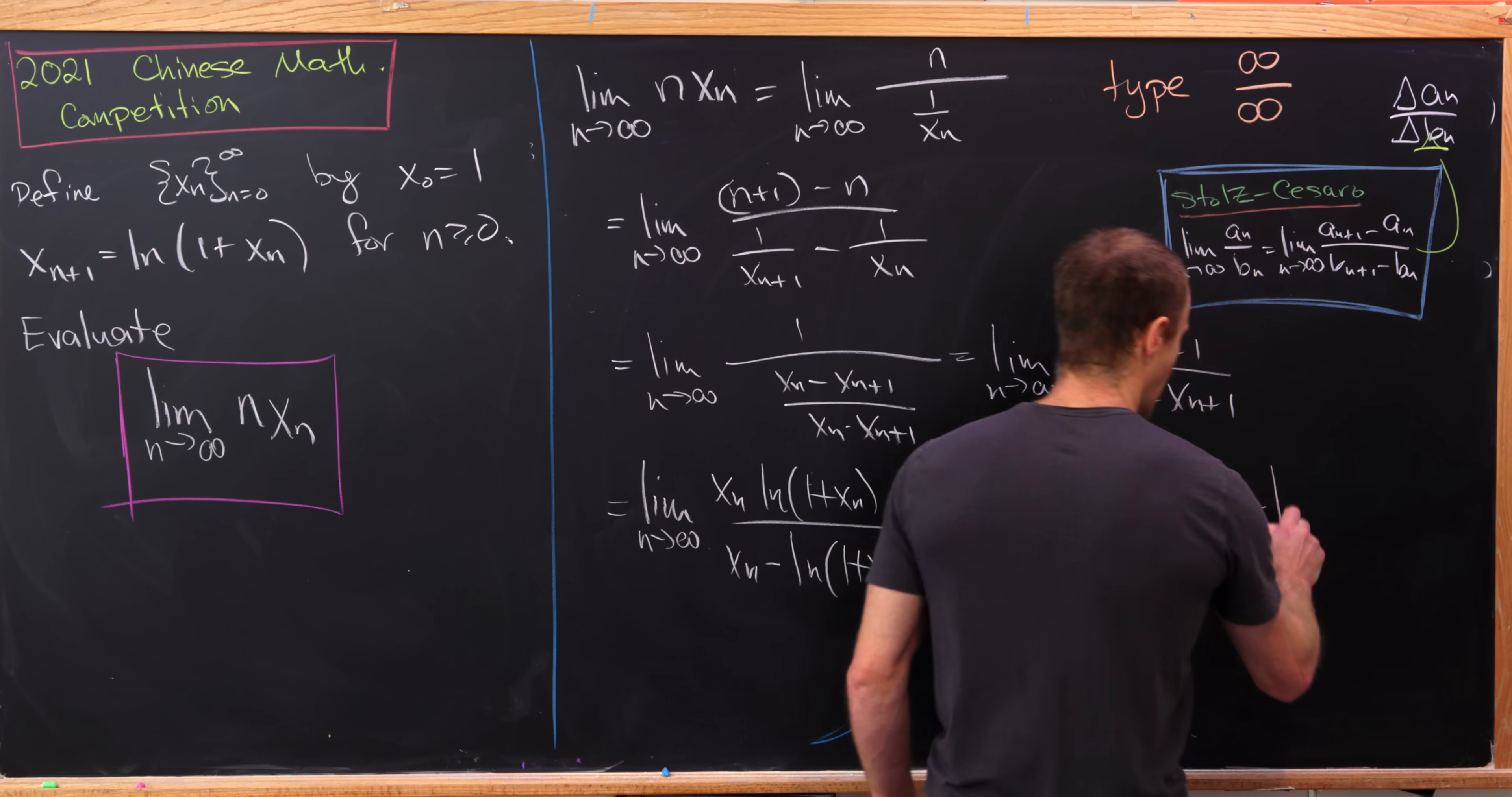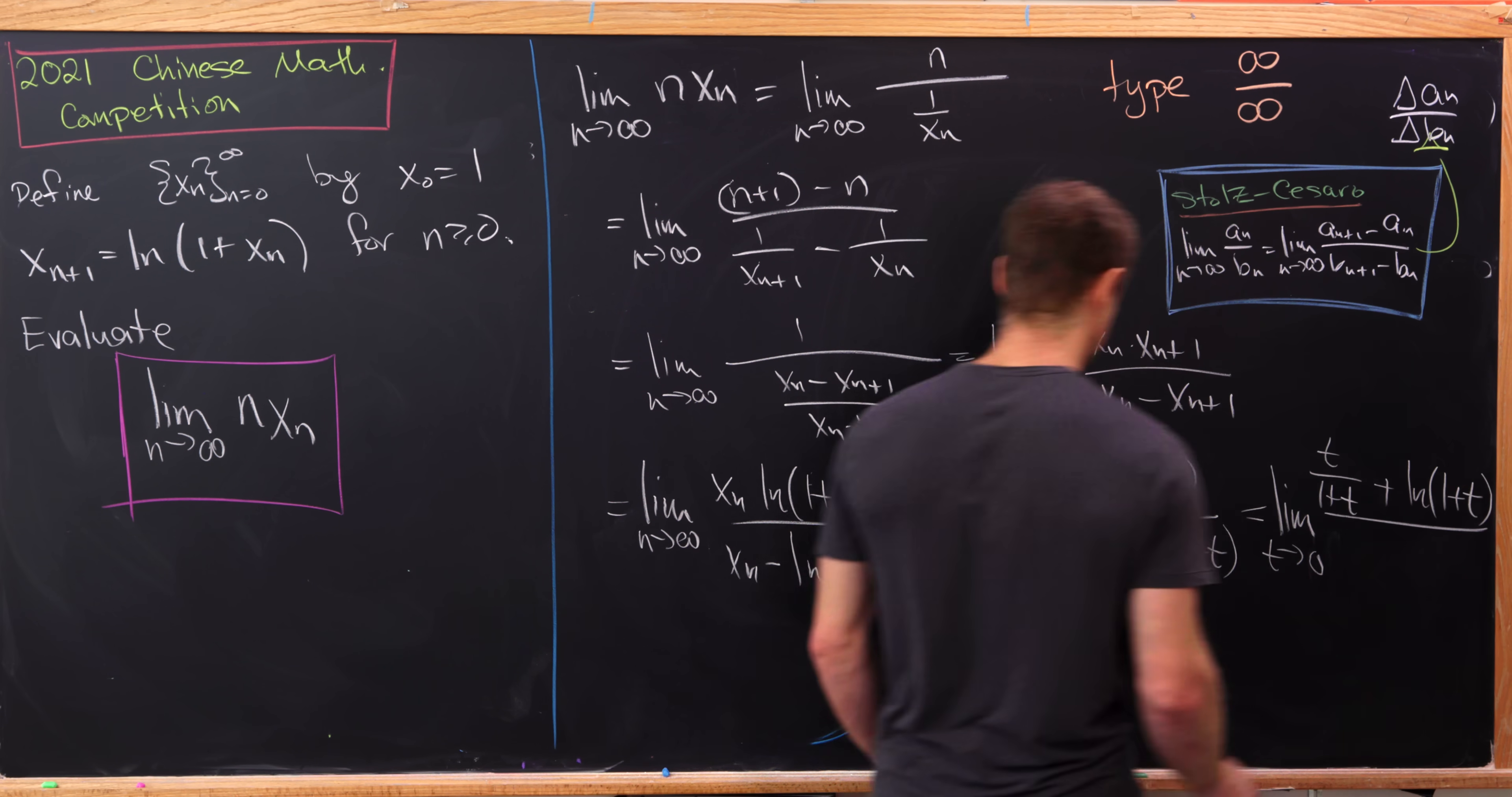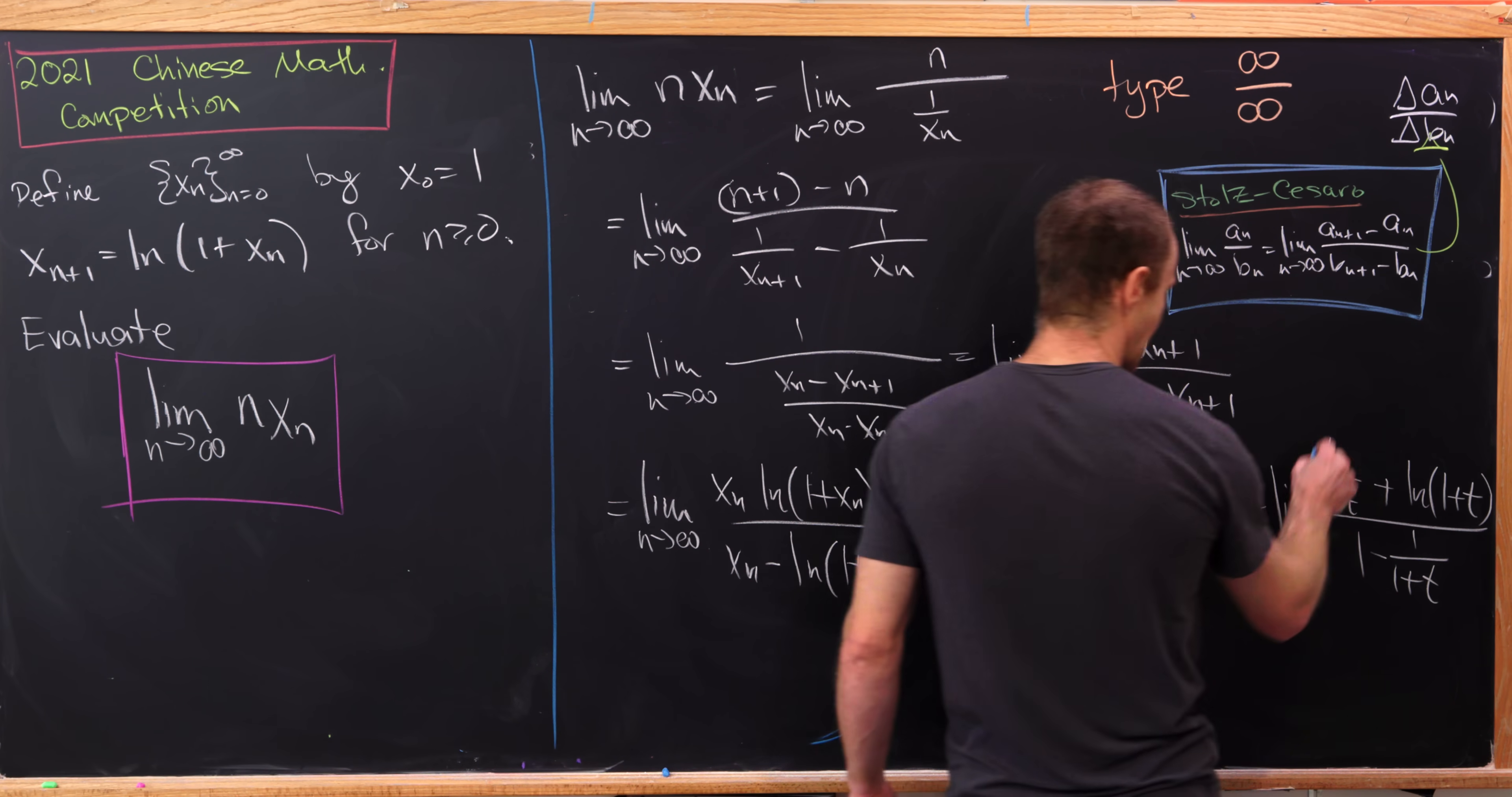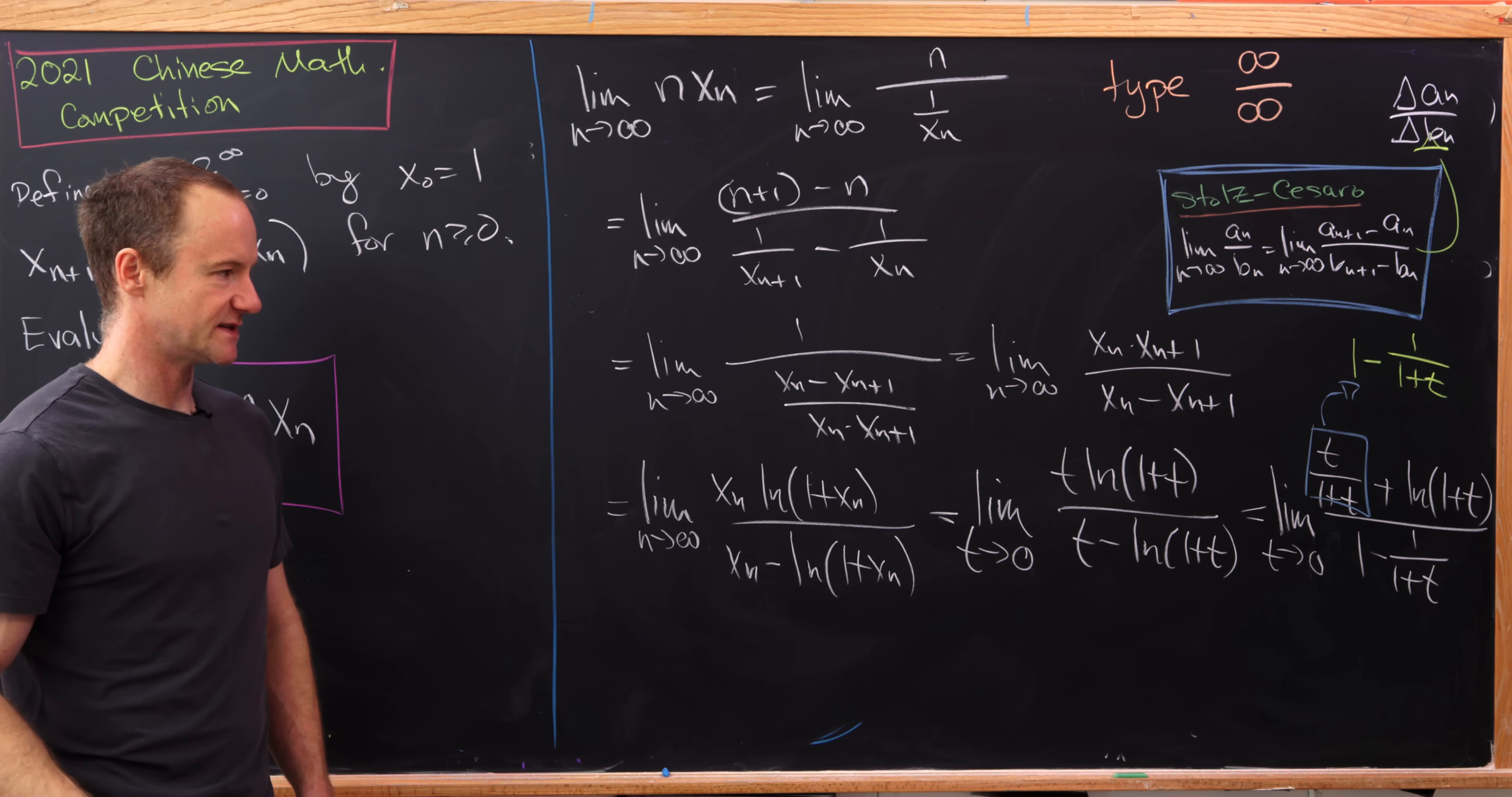So L'Hopital's rule one time will give us the limit as t goes to 0 of t over 1 plus t plus the natural log of 1 plus t. Then in the denominator, we have 1 minus 1 over 1 plus t. Now observe that's still type 0 over 0, but I can use L'Hopital's rule again. But before doing that, I'd like to take this t over 1 plus t object and rewrite it as 1 minus 1 over 1 plus t.